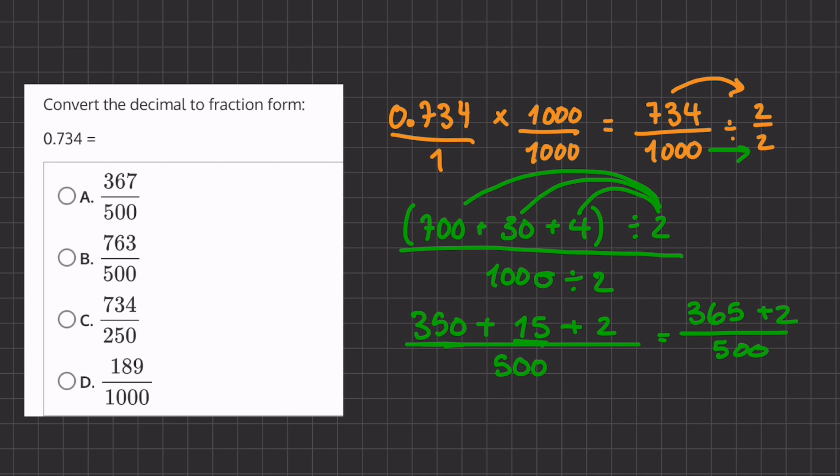365 plus 2 will give us 367, all over 500. And because we cannot further simplify, this will be our final answer.